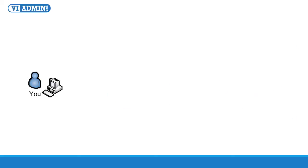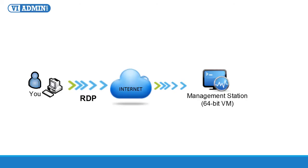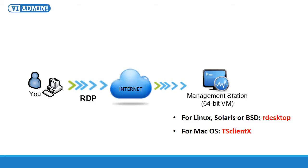After signing in, you'll receive a username and password to connect to your own management station through Microsoft Remote Desktop Protocol (RDP). If you're connecting from a non-Windows-based computer, you can use RDP clients for Linux, Solaris, or BSD. For Mac OS, you can use TSClientX. You can even access the lab from your iPad by installing the free 2X app from the Apple App Store. No matter where you are located — different city or continent — you can use Windows Remote Desktop to access your management station and do all of your testing and training.